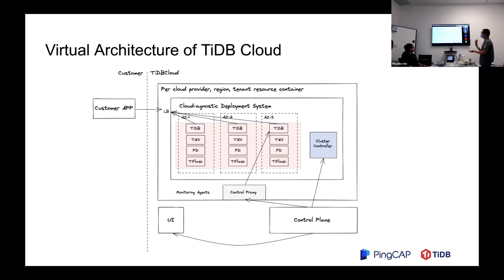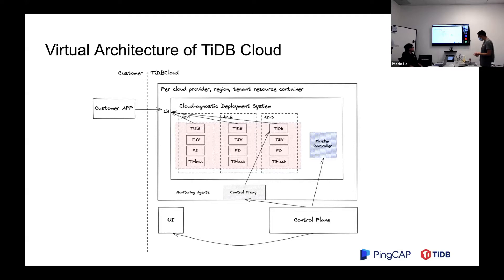For each tenant in each region in each cloud provider, there will be a resource container, and all resources will be deployed in that container. We already have a control plane to control deployment, scaling, and other operations. We need to send commands to TiDB and to the cloud controller. The UI will talk to the control plane for serving the user.